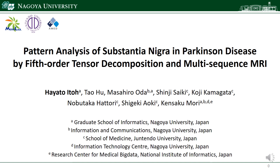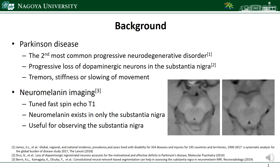Parkinson's disease is the second most common progressive neurodegenerative disorder in the world. The progressive loss of dopaminergic neurons in the substantia nigra is the typical characteristic. To observe the changes in the substantia nigra, neuromelanin imaging has been proposed. Since neuromelanin exists only in the substantia nigra, this is a very useful tool for observation.